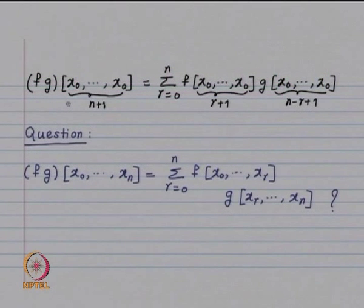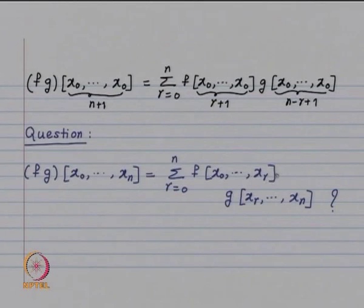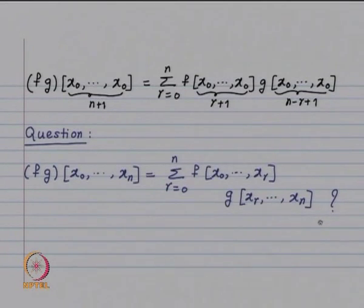When the points are repeated, we ask whether there is an analogous formula using n+1 distinct points x₀, x₁, …, xn. The question is whether the divided difference of f·g at these distinct points equals summation r from 0 to n of (divided difference of f at x₀,…,xr) times (divided difference of g at xr,…,xn). The answer is yes, and that is the Leibniz formula for divided differences.